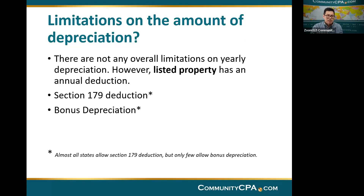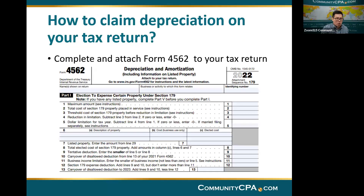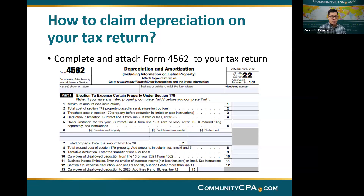Lastly, how do you claim bonus depreciation, Section 179, or your regular depreciation? Very simple — you only need to complete Form 4562 and attach it to your tax return. The calculations and all related information will be included in your tax return using Form 4562.